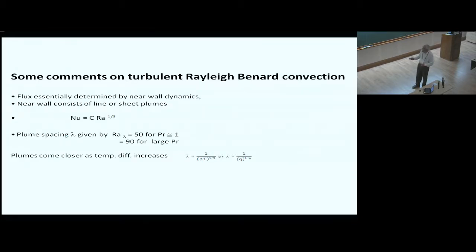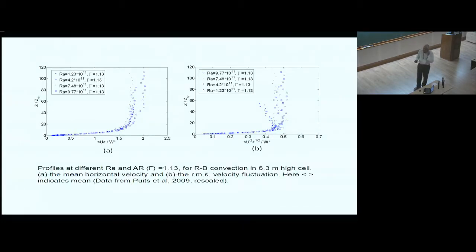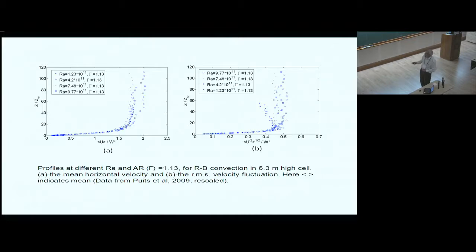The plume spacing essentially goes like 1 over delta T to the power of one-third, or heat flux to the power of one-fourth. We looked at data from the Barrel of Ilmenau experiment and tried to use the scaling with Z over Z_W and mean velocity divided by the Deardorff velocity scale. For aspect ratio 1 and different Rayleigh numbers, you can see that there is pretty good collapse.